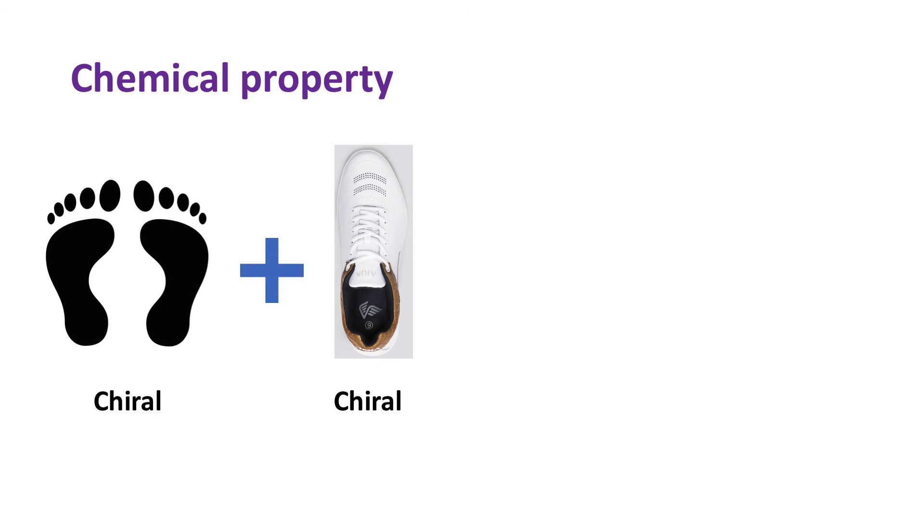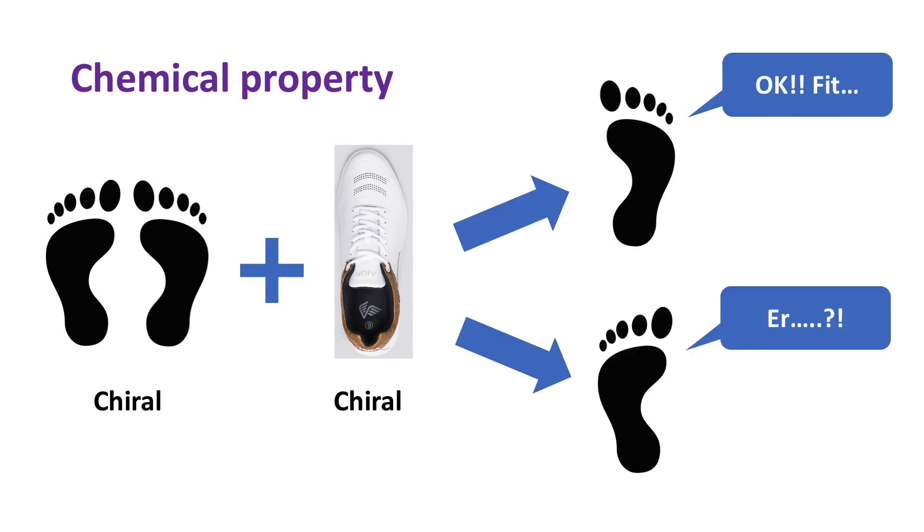Now, let's change the sock to a shoe. This time, the shoe shows chiral properties, and only one foot can fit, but not the other one. In terms of chemical reaction, as only one of the enantiomers is allowed to react, the two enantiomers show different chemical properties.